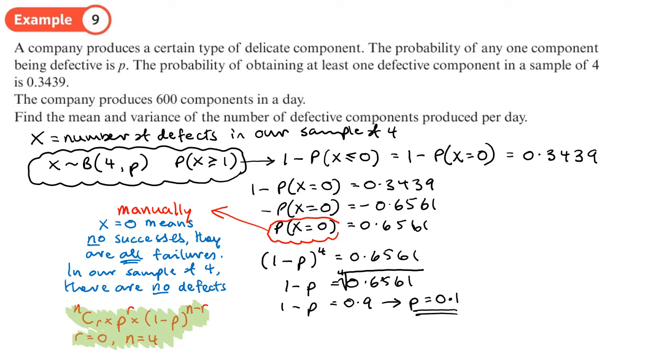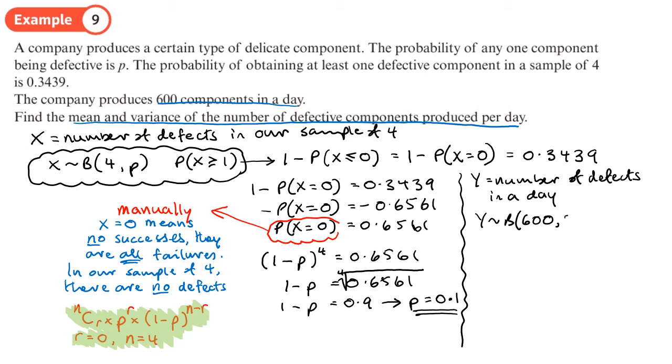Then we now need to use that. It says the company produced 600 components in a day. Find the mean and variance of the number of defective components produced in a day. Right, so we need to come up with our distribution right over here. So Y is going to be number of defects in a day. So that's what that represents now. So Y will be a binomial distribution where in a day the sample is 600 and the probability of it being a defect is 0.1.